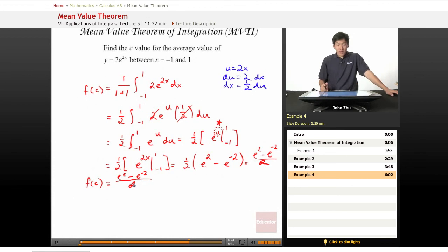So when does this value occur? We have to set this equal to 2e to the 2x, but 2c.